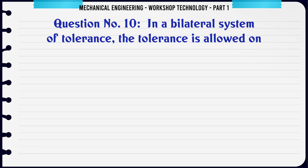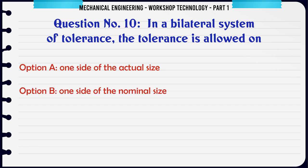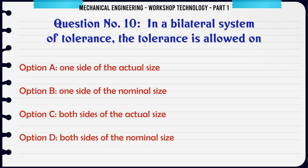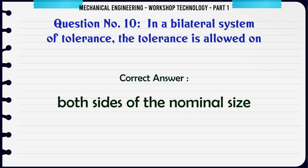In a bilateral system of tolerance, the tolerance is allowed on: A. One side of the actual size. B. One side of the nominal size. C. Both sides of the actual size. D. Both sides of the nominal size. The correct answer is: Both sides of the nominal size.